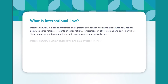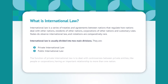What is international law? International law is a series of treaties and agreements between nations that regulate how nations deal with other nations, residents of other nations, corporations of other nations, and customary rules. States do observe international law, and violations are comparatively rare. International law is usually divided into two main divisions.